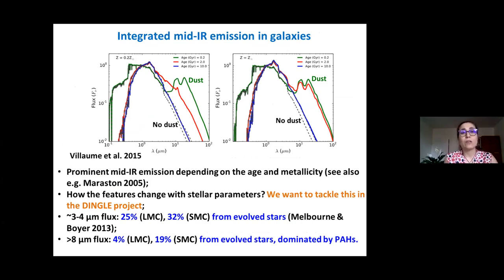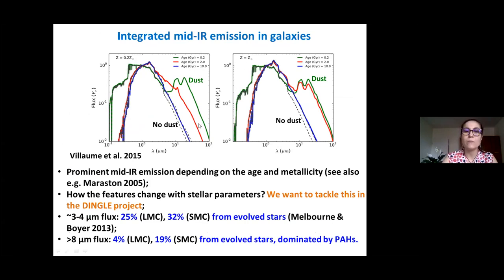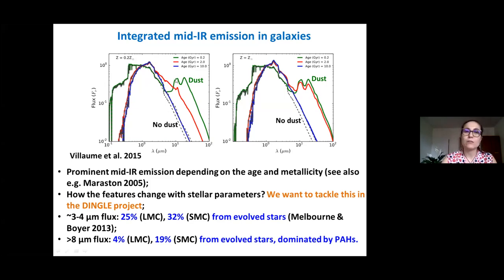In the last slides, I want to convey the importance of modeling circumstellar dust for stellar populations, in particular to model mid-infrared emission in galaxies. Here we see the integrated flux of all the stellar population for different stellar ages and two choices of metallicity. In black is the case with no dust — no prominent infrared feature — but as soon as we include dust, depending on the age of the stellar population and metallicity, we can get a very prominent infrared feature.